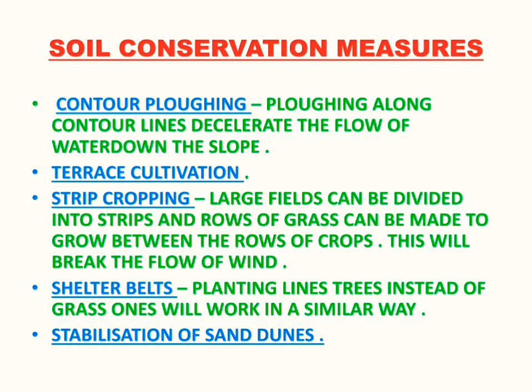The following measures can help preserve soil. First is contour plowing — plowing along contour lines decelerates the flow of water down the slope. Then there is terrace cultivation. The third is strip cropping, where large fields are divided into strips.